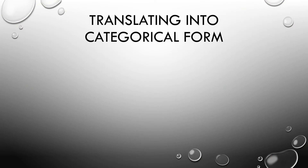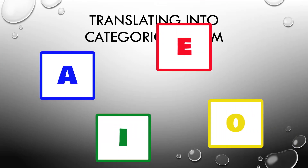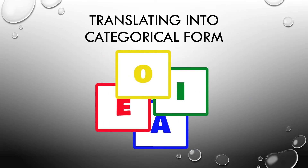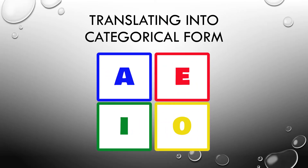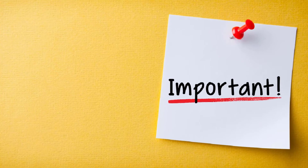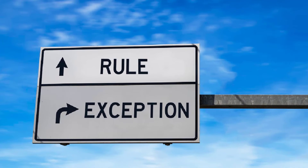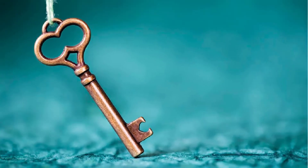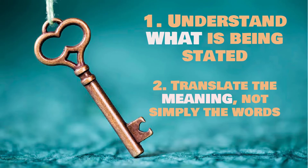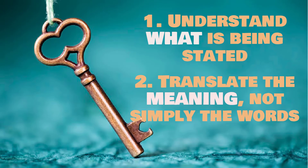Now that we know the four parts of a categorical proposition, let's look at how we might translate ordinary sentences into proper categorical form, so that they formally resemble one of our four proposition types with all four parts clearly distinguished. This is a necessary skill because formal logic demands analysis of an argument's form. The key is to clearly understand what is being stated and to translate the meaning, not simply the words.